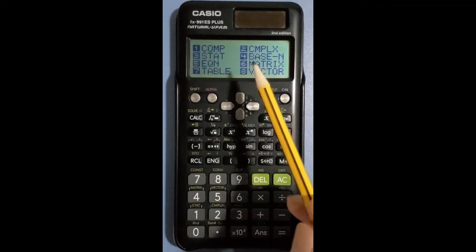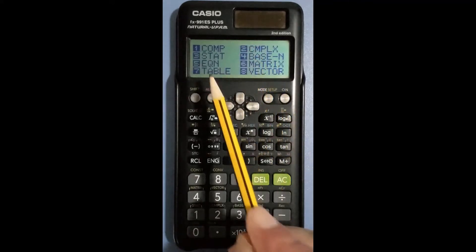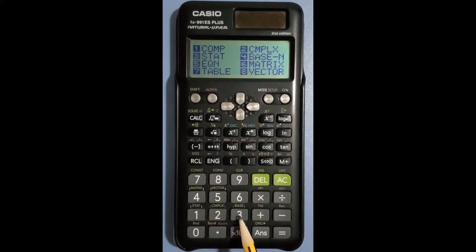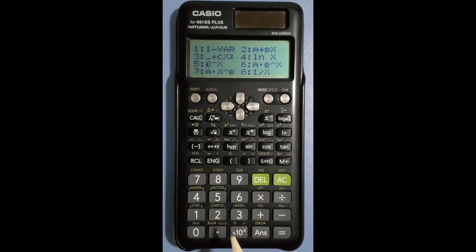Press the mode button. This menu will appear. Statistics mode is number three, so press the three button. We need to work with the linear equation y equals a plus bx, which is number two. So press the two button.